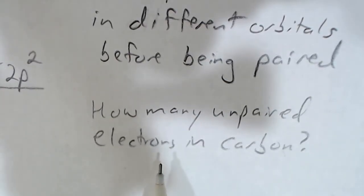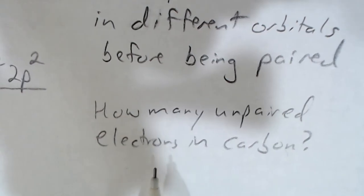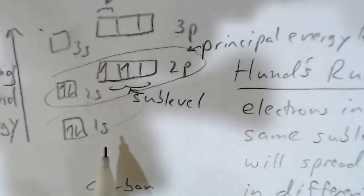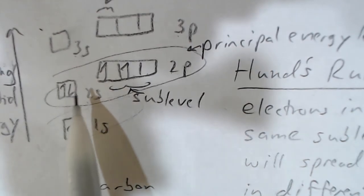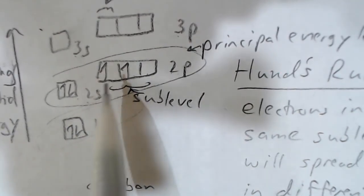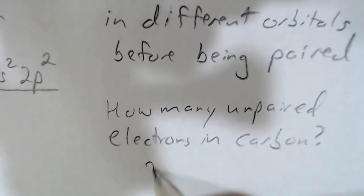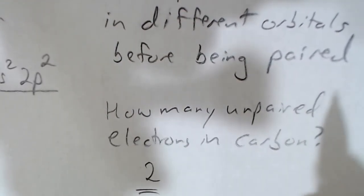Let's say that we had the question how many unpaired electrons are in carbon. Here was our electron configuration of carbon. Even though there's an even number of electrons, there are 2, 4, 6 electrons, they're not all paired up. Here, these two electrons are not paired up. They're in different orbitals, so there end up being 2 unpaired electrons in carbon.